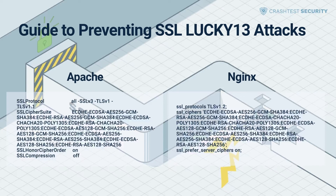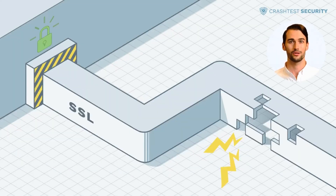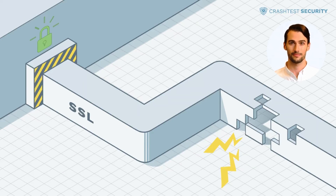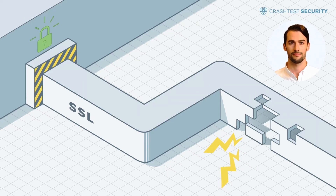Note that this limits the cipher suites and protocol versions to recent SSL/TLS versions, which might exclude users with older browsers. Try Crash Test Security today to discover how it integrates into your development stack for efficient, automated vulnerability scanning. The trial is free. Also, subscribe to the Crash Test Security channel to get more information about the most significant web security threats, their prevention, and how to use the Crash Test Security Suite. Thank you for watching and see you in our next video.